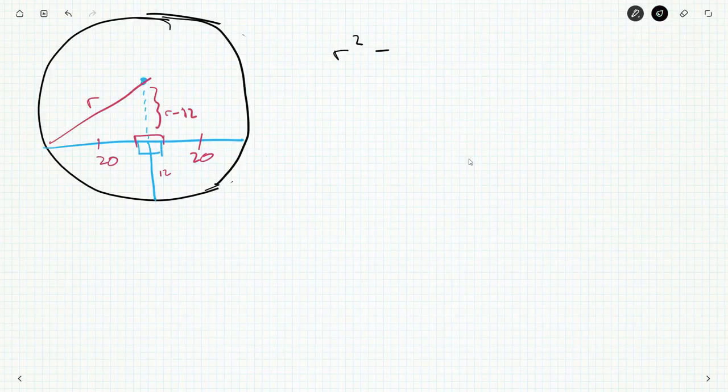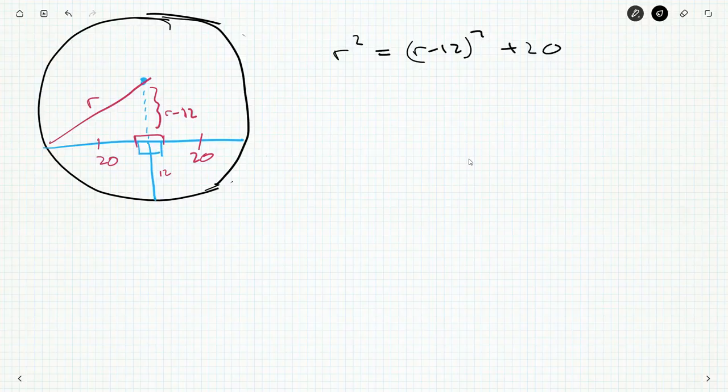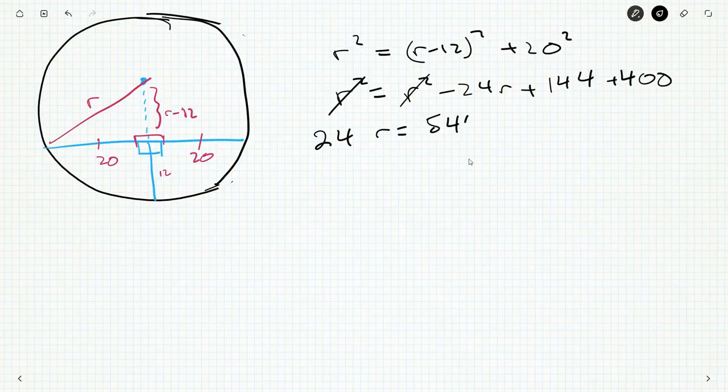Now we get an equation. R squared is R minus 12 squared plus 20 squared. R squared is then R squared minus 24R plus 144 plus 400. Cancel those. Bring the 24R over to the other side. And 544.